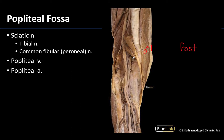The popliteal fossa is in the posterior knee region — it is that diamond-like depression in the back of the knee. The fossa is bounded by muscle tendons of the hamstrings more superiorly, which you can see right here, as well as the gastrocnemius tendon, which has been removed in this image to really show how that neurovasculature travels into the leg region.